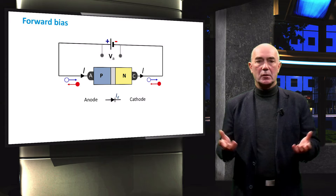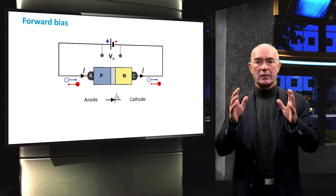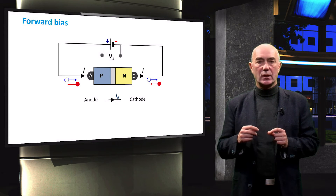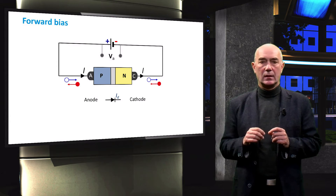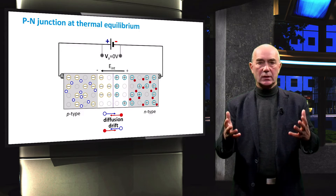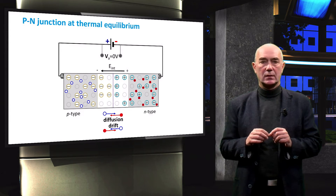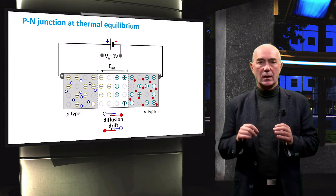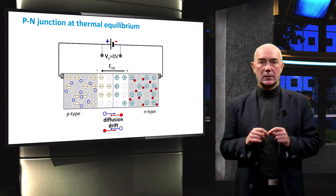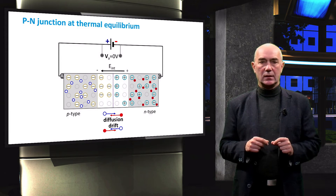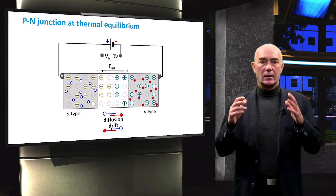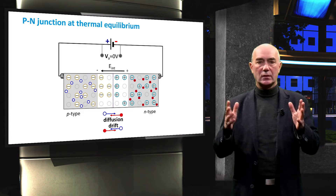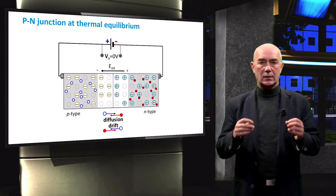The objective of this video is to explain what happens to a PN junction under forward bias. Let's start by looking at the bonding diagram of a PN junction diode at thermal equilibrium. Since the external bias voltage is zero volts, we have the same situation as at thermal equilibrium — a depletion region at the interface between the P and N semiconductors, balancing diffusion and drift currents of electrons and holes, resulting in zero net current through the diode.